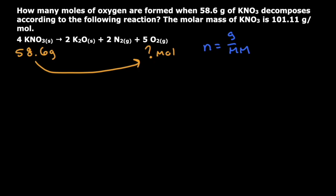And so I'm going to take this 58.6 right here and divide it by the molar mass. And they tell me in the problem that the molar mass of this chemical right here is going to be 101.11 grams per mole. So I'm going to take the mass in grams and divide it by the 101.11 here.